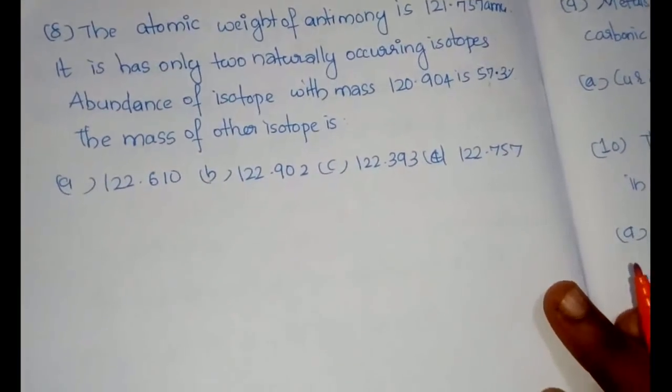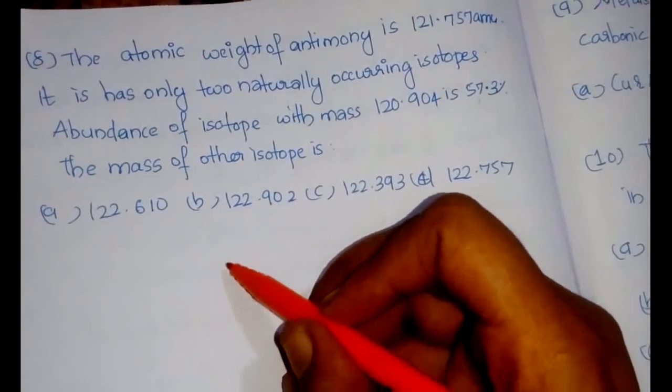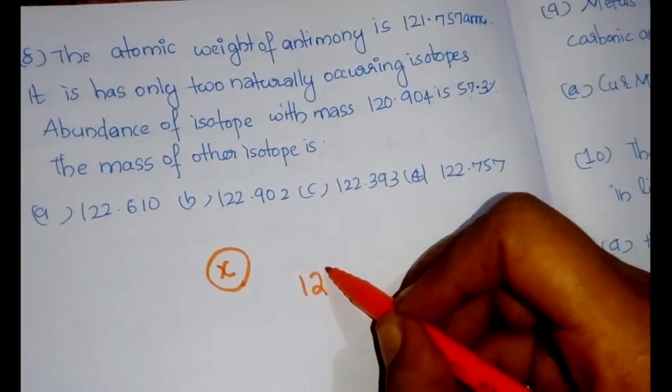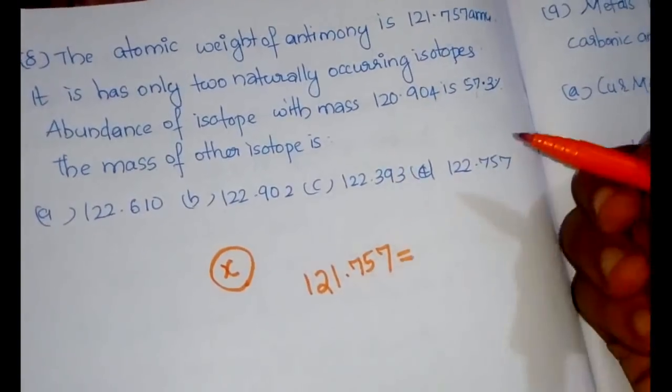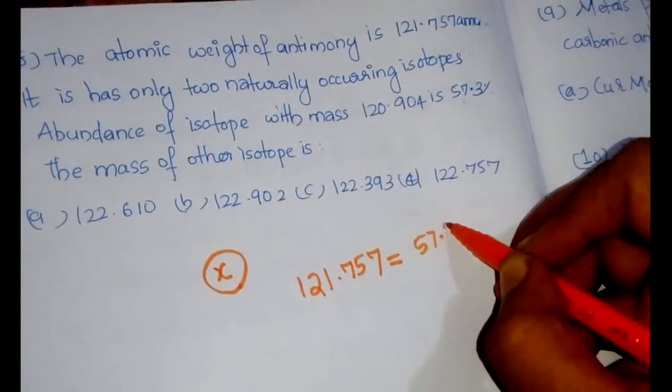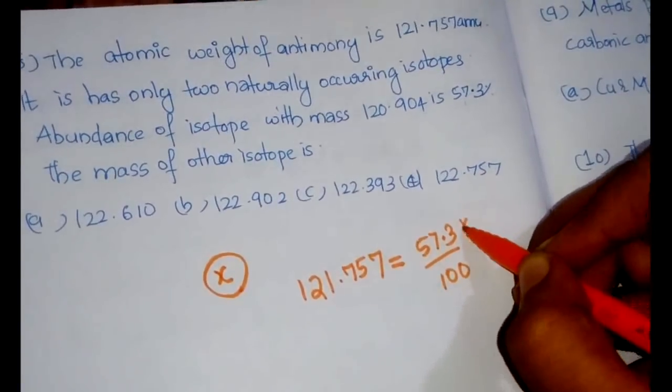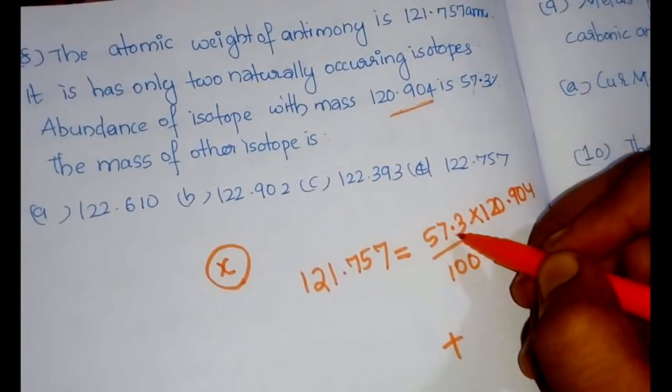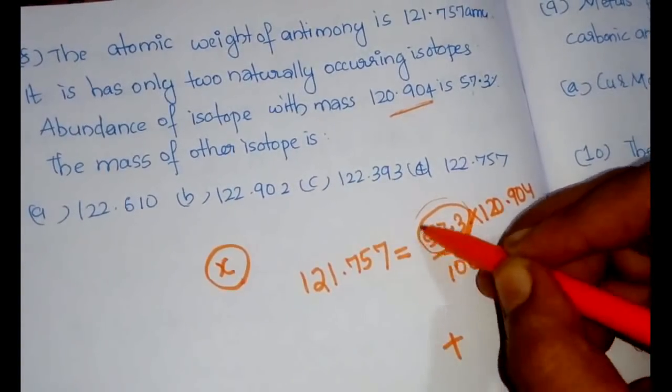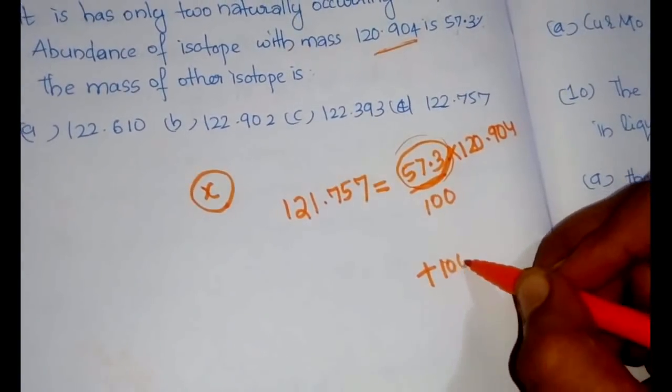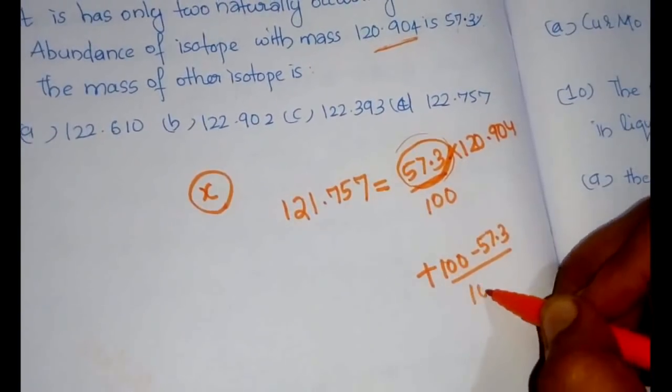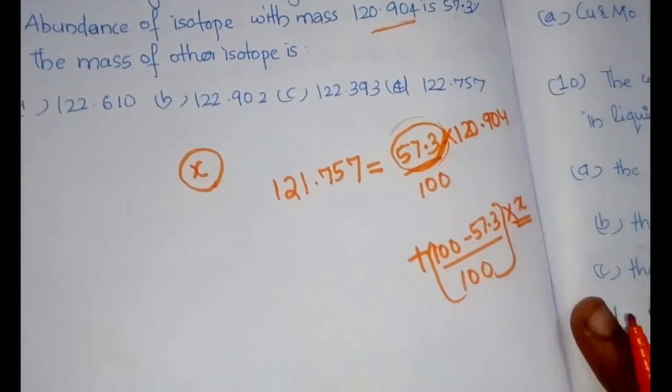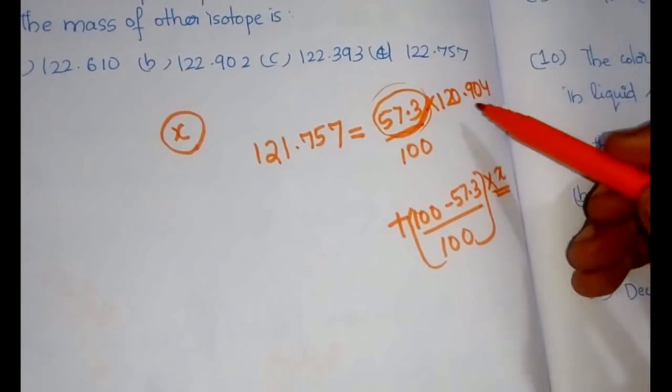The next question: the atomic weight of antimony is 121.757 amu. It has only two naturally occurring isotopes. The abundance of isotope with mass 120.904 is 57.3%. The mass of other isotope is what?